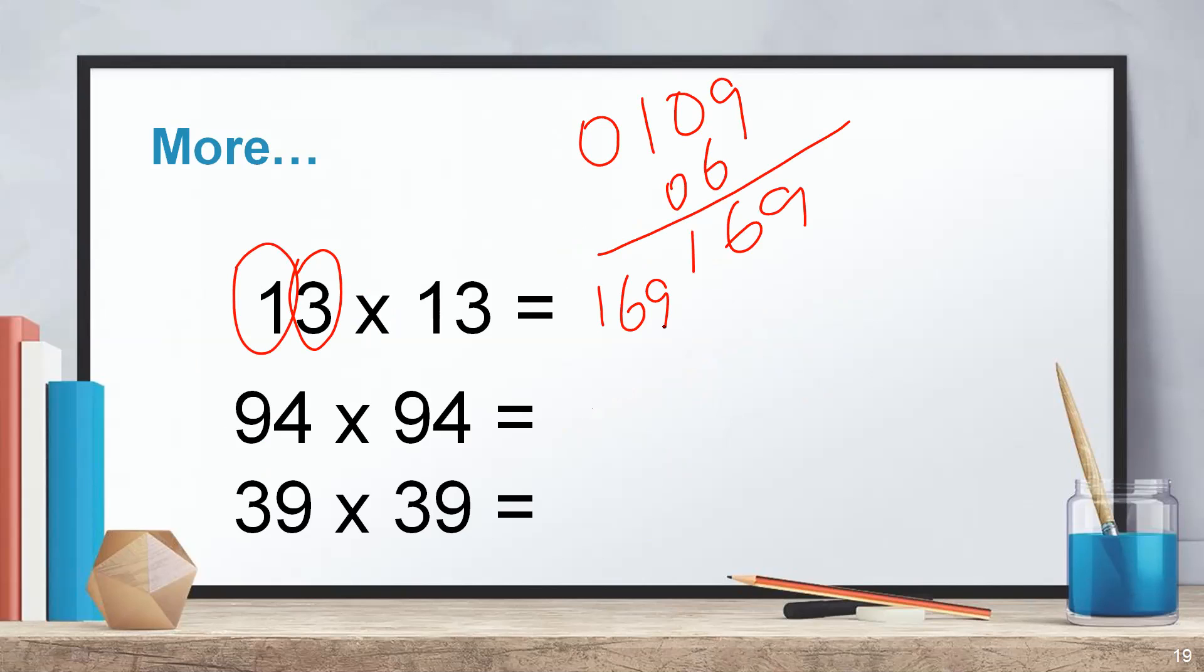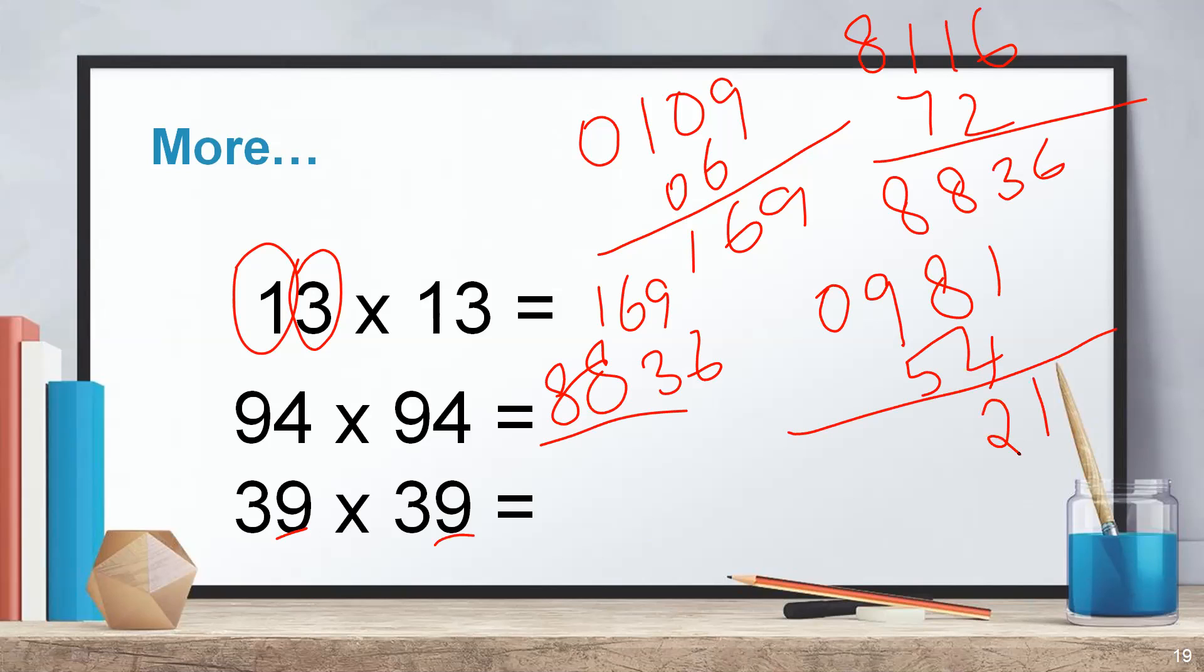94 times 94. First, write square of 9 is 81. Square of 4 is 16. 9 times 4 is 36. 36 times 2 is 72. So your answer is 8, 8, 3, 6. 8,836. If you want to square 39 times 39, write square of 3 as a two-digit number. It's 09. Square of 9 is 81. Then 3 times 9 is 27. 27 times 2 is 54. So 1, 8 plus 4 is 12, it's going to be 15. So your answer for 39 times 39 is 1,521.